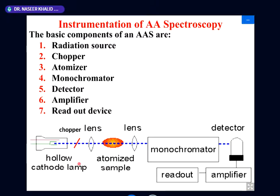We were at this point. This is the hollow cathode lamp, this is the chopper, this is the atomizer, here is the monochromator, detector, amplifier, and the readout.